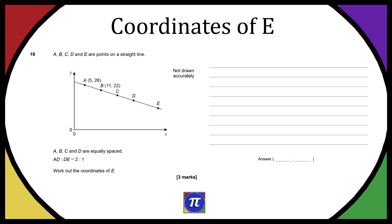On the next line it says that A, B, C and D are equally spaced and also that A to D and D to E is a ratio of 2 to 1, so basically the distance from A to D is twice the distance of D to E. Work out the coordinates of E and this is a three mark question.